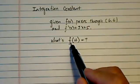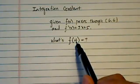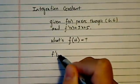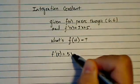We're asked to find the function evaluated at 4. Well, we can't evaluate it without a function, so we have to find the function. In order to find the function, we have to integrate the function derivative.